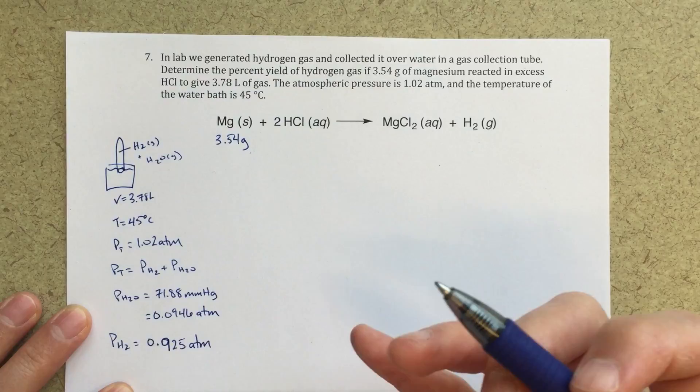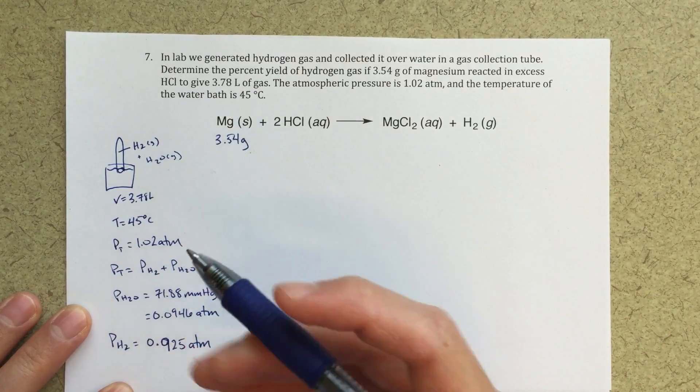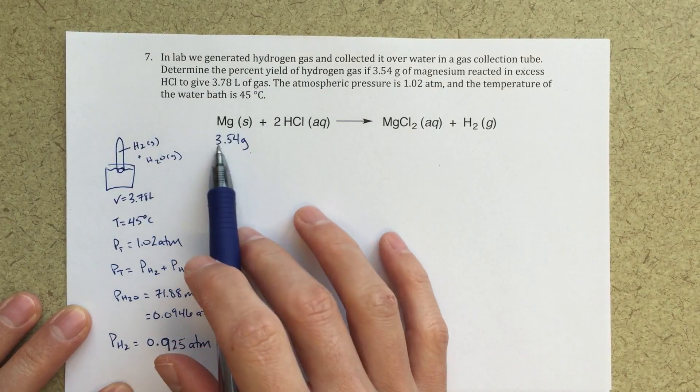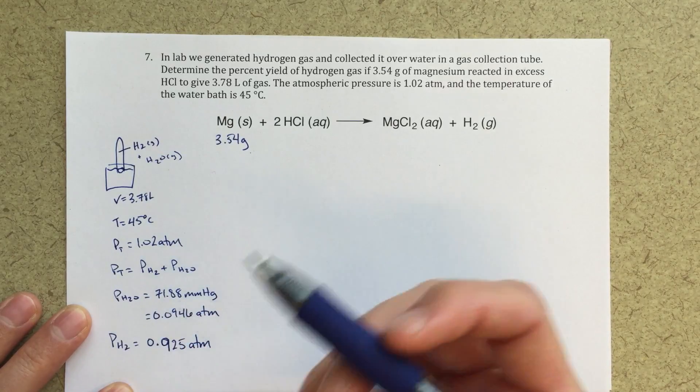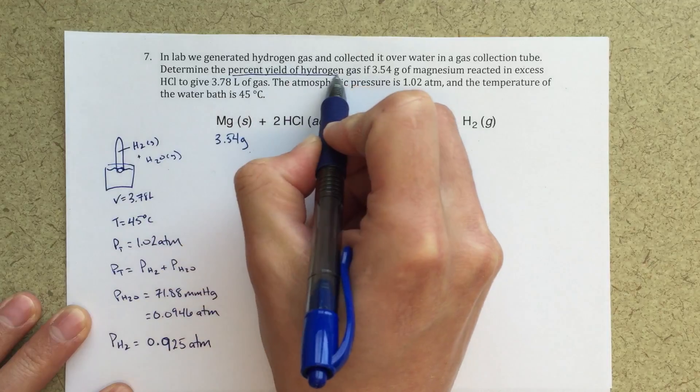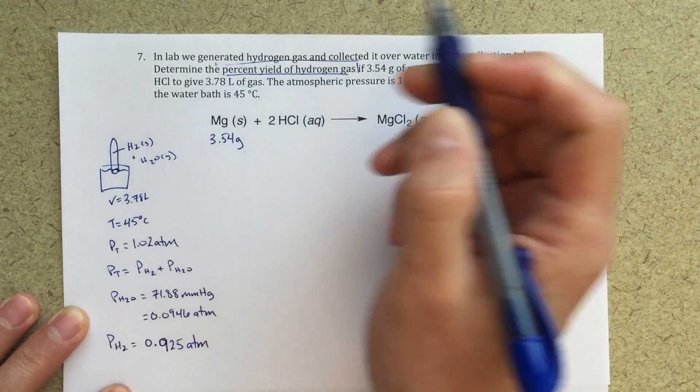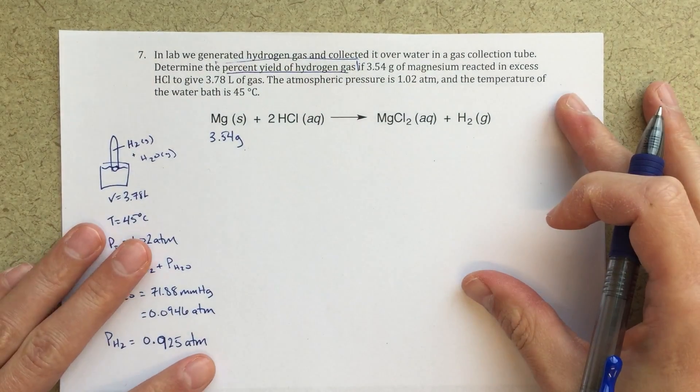And if I want to figure out the theoretical yield, how much of this is going to theoretically be produced, I'm going to use this 3.54 grams. The end goal of this problem is to determine the percent yield of hydrogen gas.